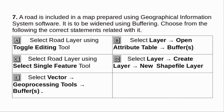A road is included in a map prepared using geographical information system software. It is to be widened using buffering. Choose from the following the correct statements related to it. A. Select road layer using toggle editing tool. B. Select layer, open attribute table, buffering. C. Select road layer using select single feature tool. D. Select layer, create layer, new shapefile layer. E. Select vector > geoprocessing tools > buffering. Answer: C and E.